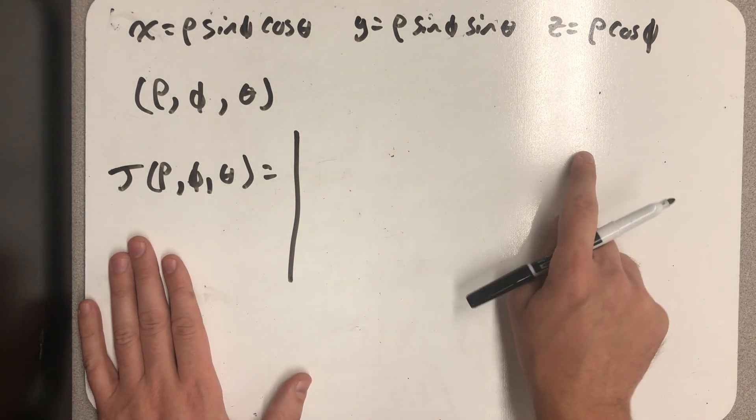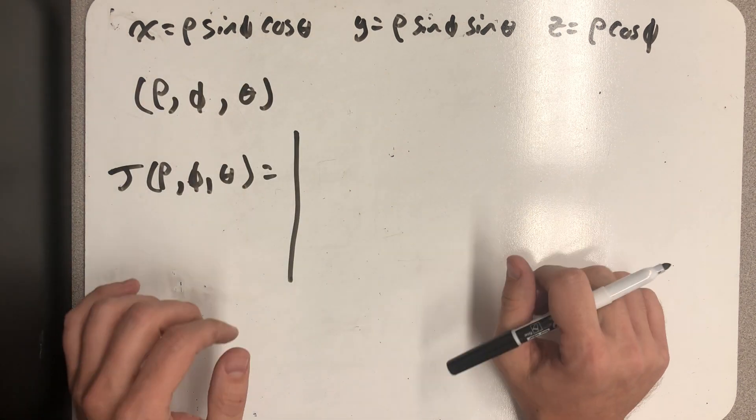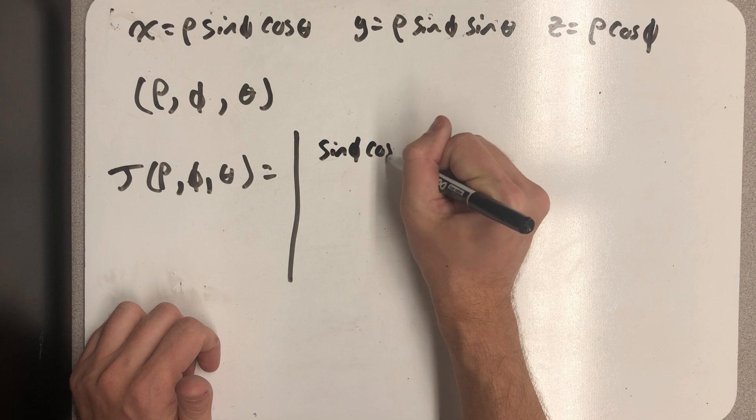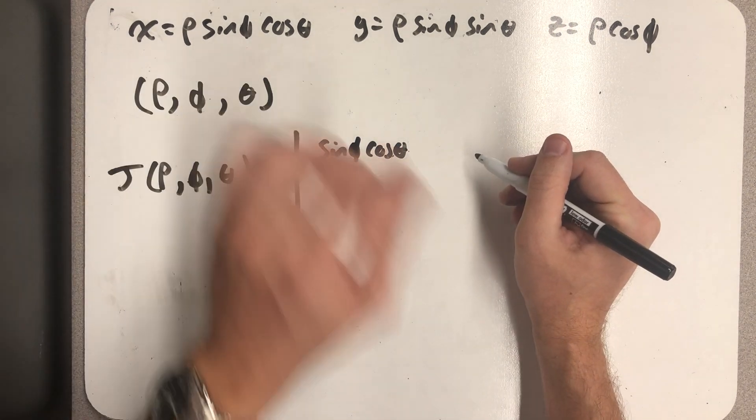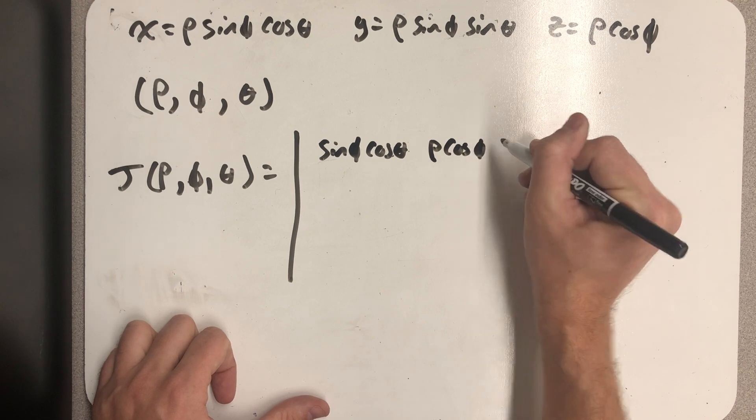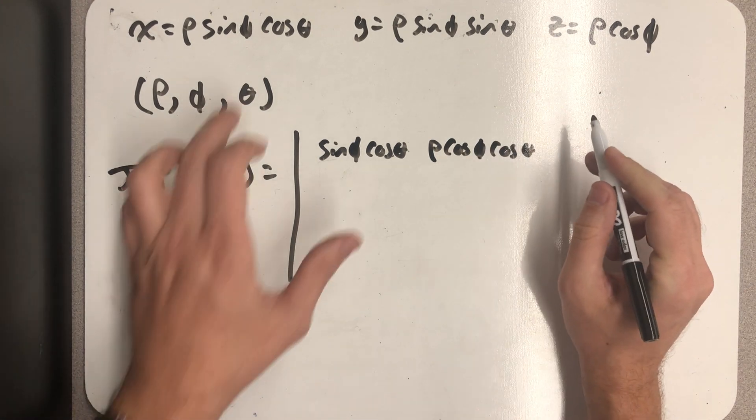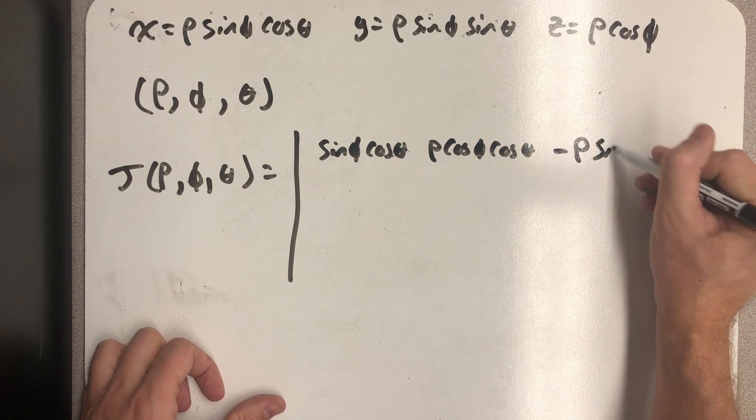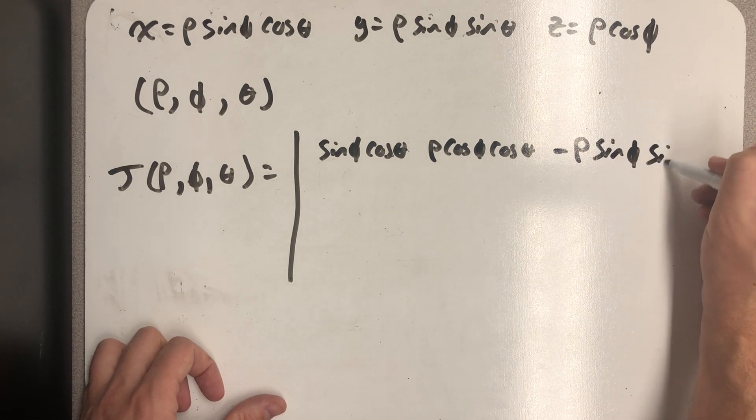So across this top row, I'm taking partials of x, first with respect to rho, where I would get sine phi cosine theta. Then with respect to phi, where I would get rho cosine phi cosine theta. And then finally, with respect to theta, where I would get minus rho sine phi sine theta.